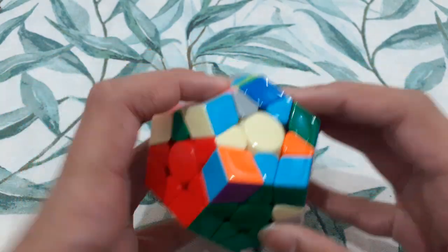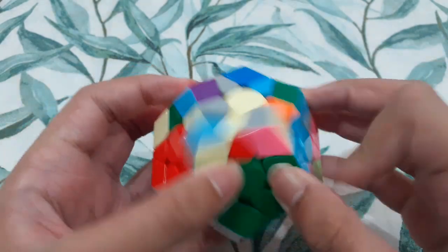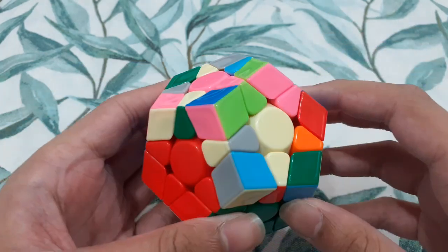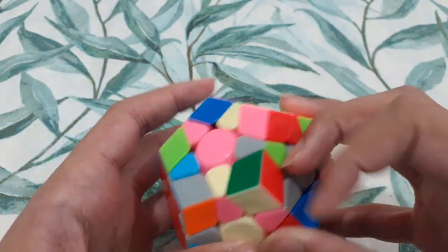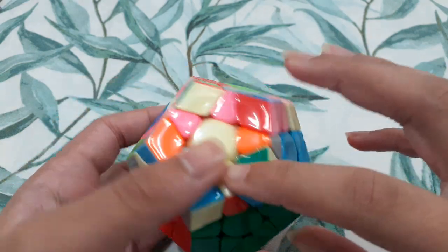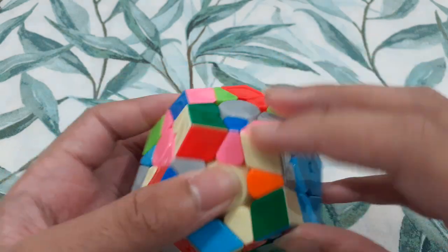Now I have purple. I see these pieces which can be inserted like this, just an R2 insert into the back. Now I see that this can be paired up and this edge is kind of solved, so I can do a little bit of block building.